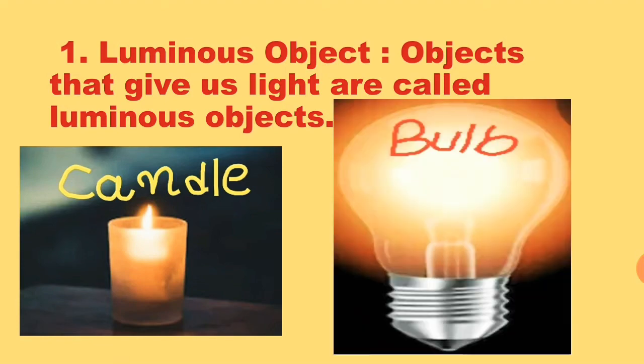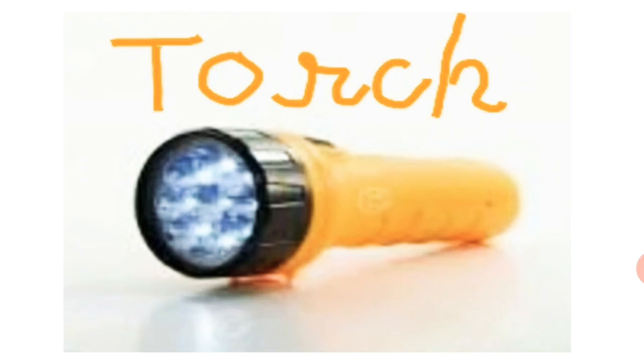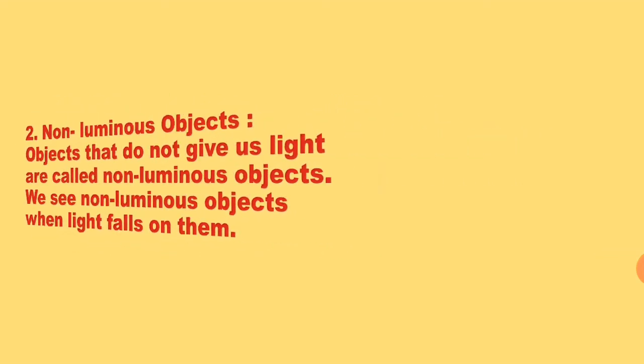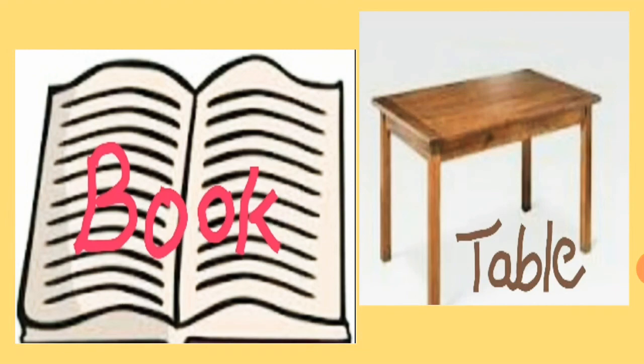Examples of luminous objects include candles, bulbs, torches, etc. Non-luminous objects are objects that do not give us light. We see non-luminous objects when light falls on them — like a book, table, chair, and other things.